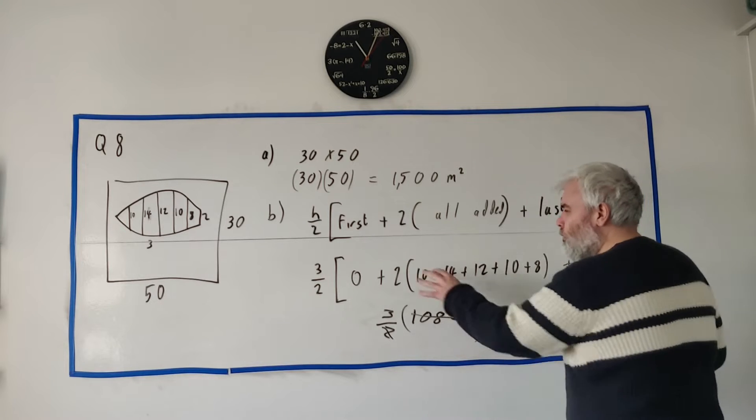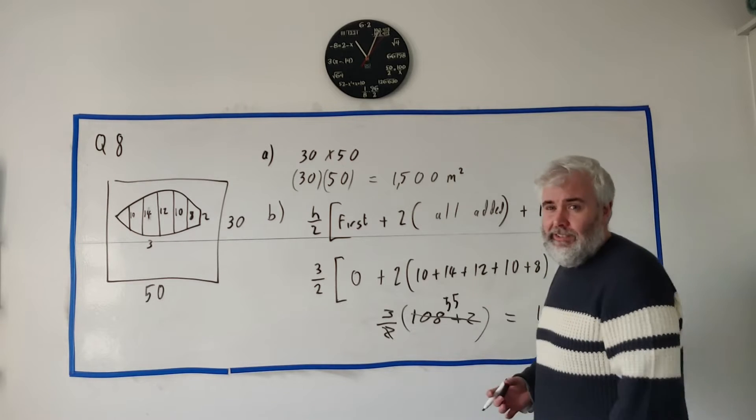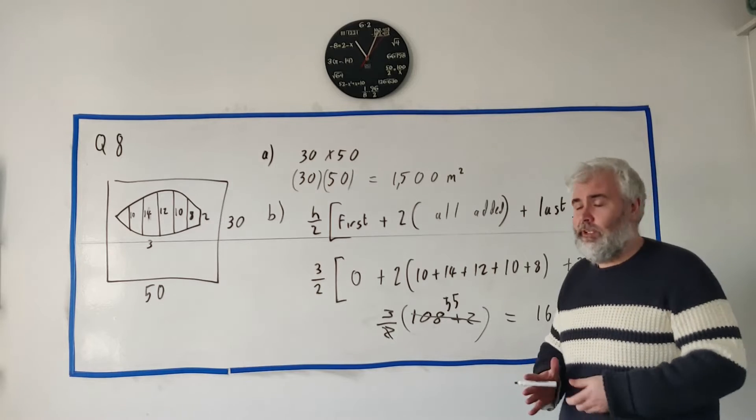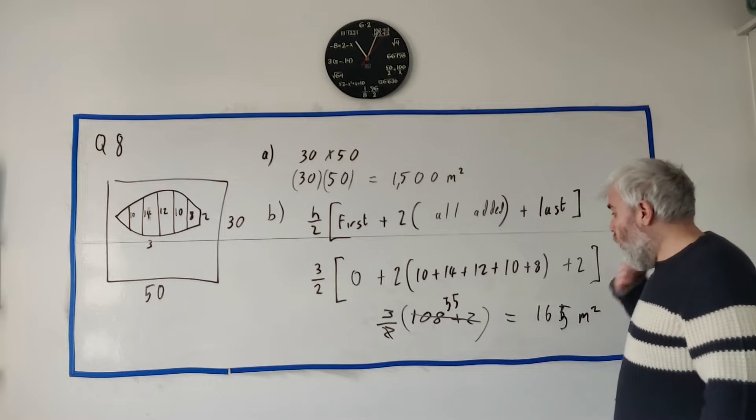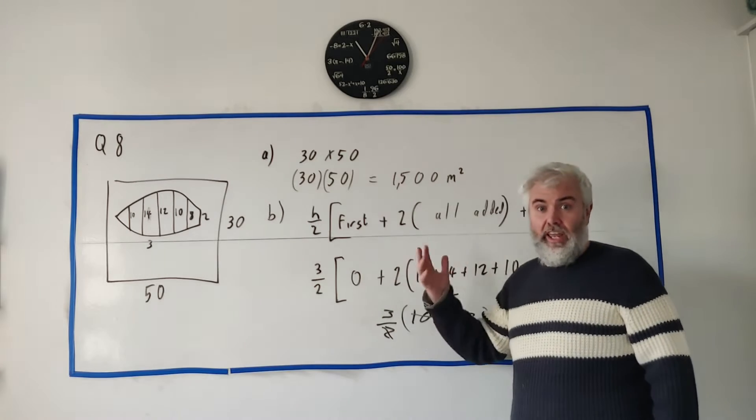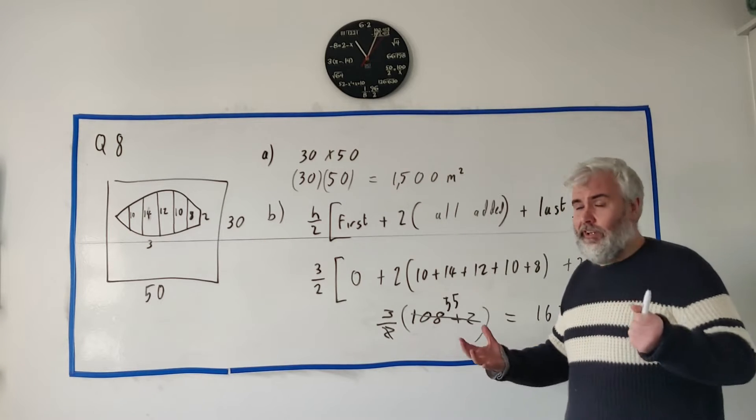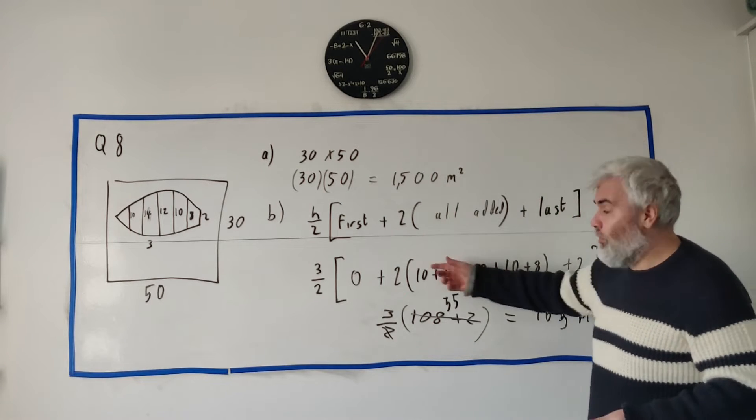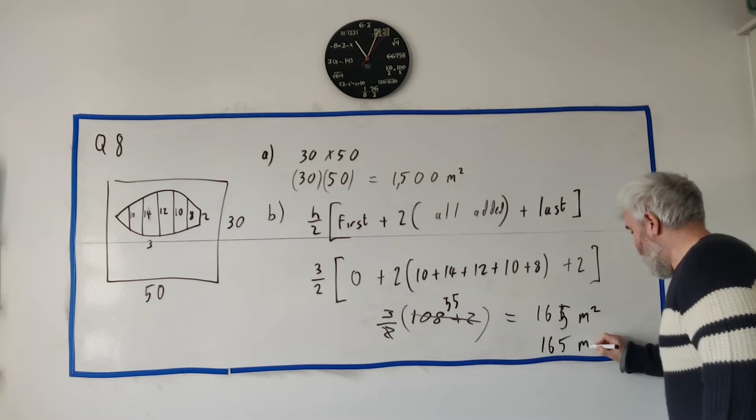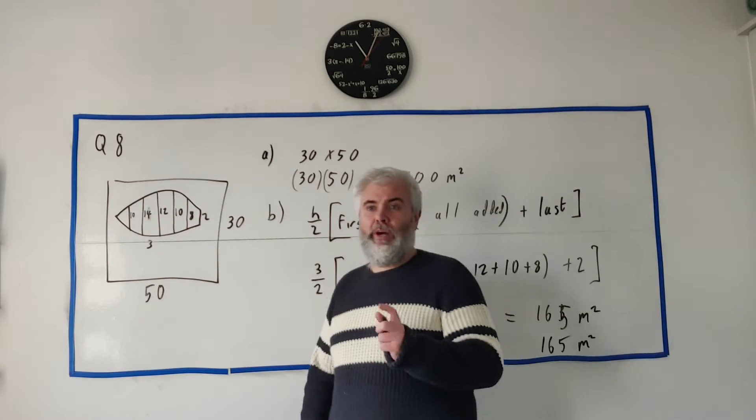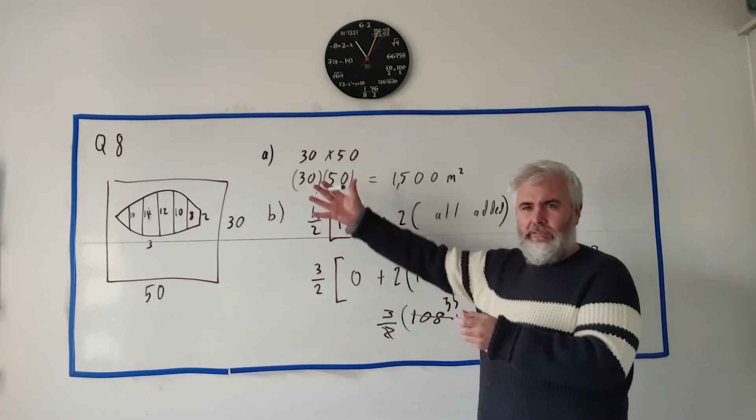Go ahead and use a calculator. Whenever there's a sum this big I would break it into parts. The calculator will save you an extra minute, but honestly you're bound to make a mistake if you put all this into the calculator in one go. Break it up into parts, take the extra minute, and double check. So that's the answer to part B: 165 meters squared.